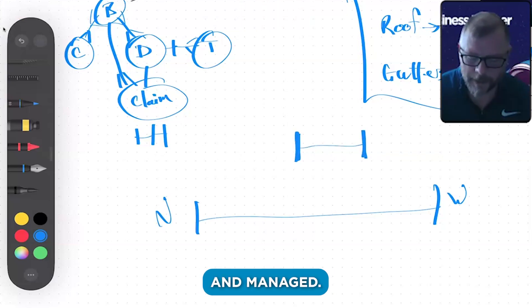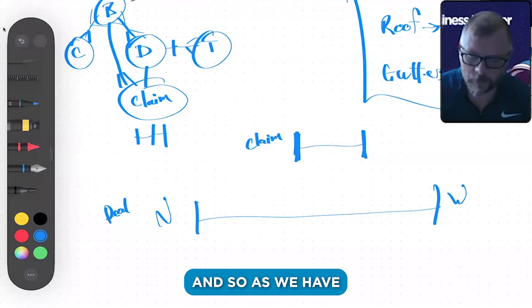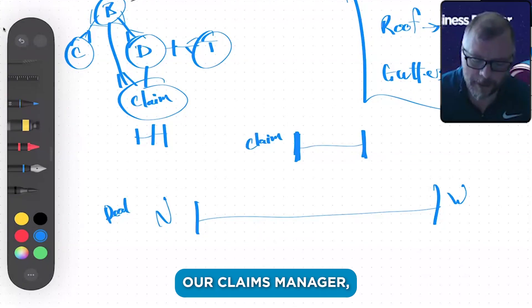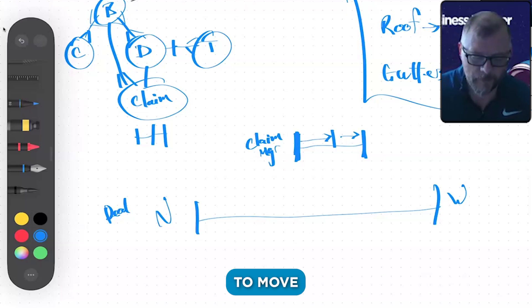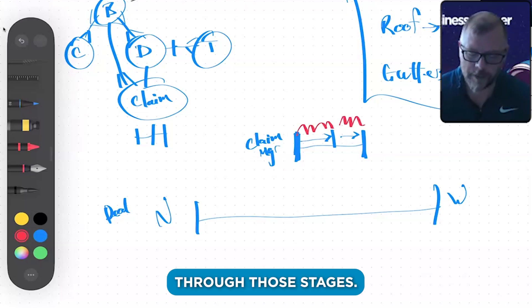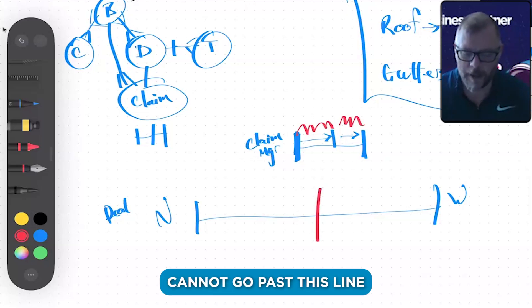As we have our claims manager doing the things to get the claim to move to key milestones, so you have a claim and that claim is going to move through these stages—it's going to bounce bounce bounce through those stages. There are certain points where the deal cannot go past this line until the person running the claims gets it to here.